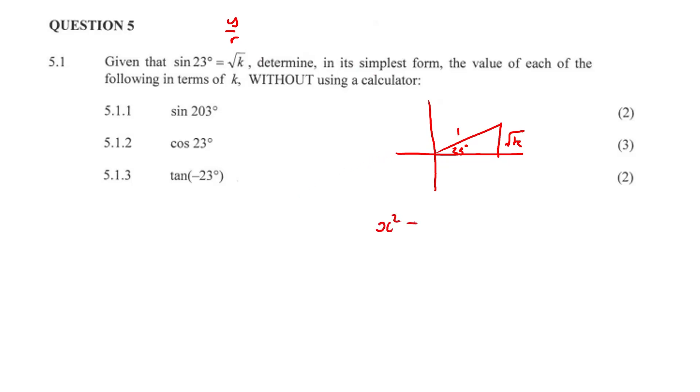So X squared plus Y squared is equal to R squared. Well, X squared value is what we're looking for. Y squared is just going to be root K squared. So root K times root K is just going to be K, and all of that is going to be equal to 1. So X squared is equal to 1 minus K.